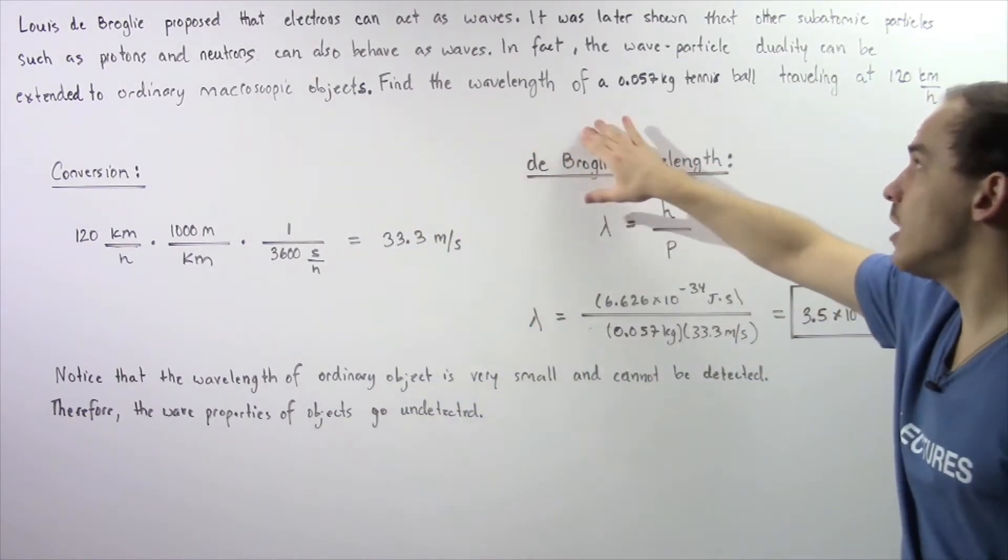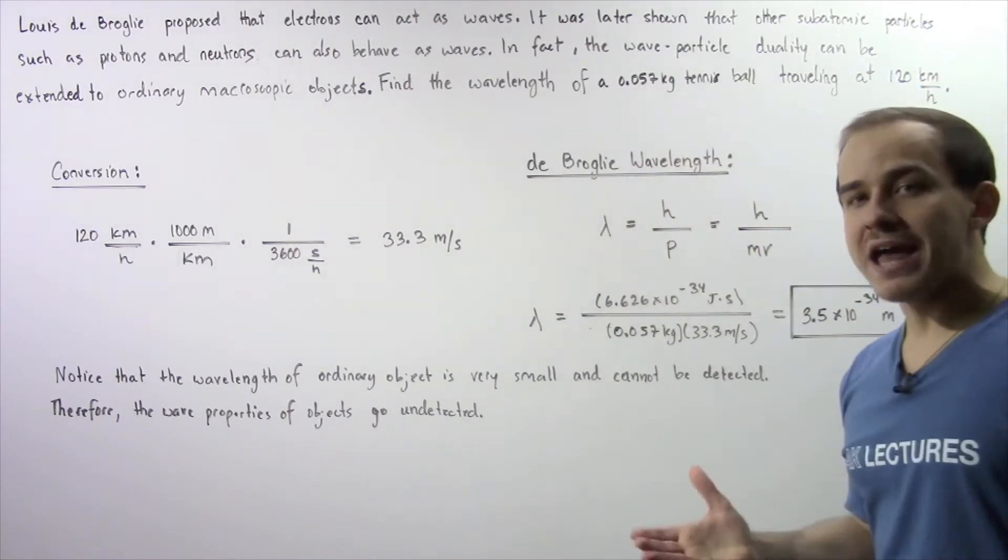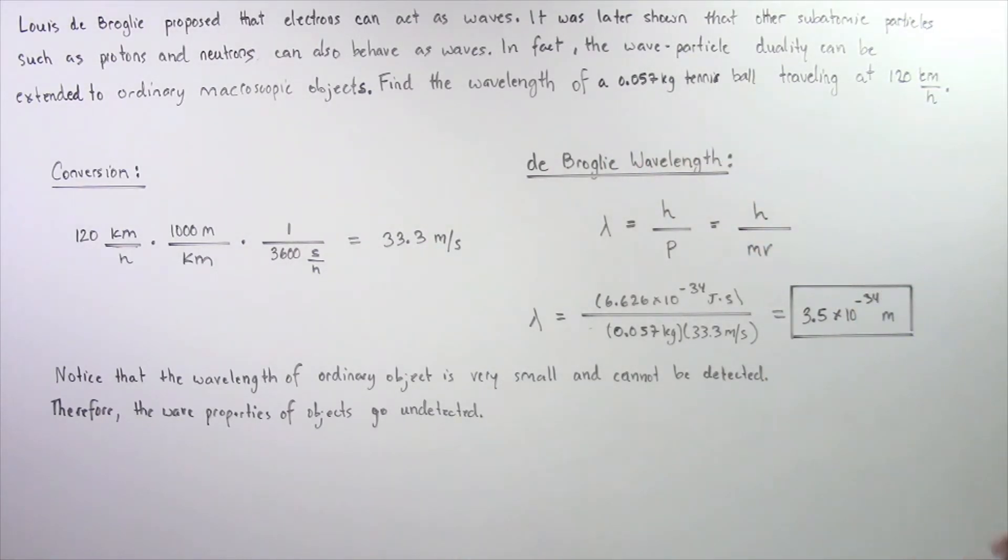So with that in mind, let's find the wavelength of a 0.057 kg tennis ball that is traveling with a velocity of 120 km an hour.